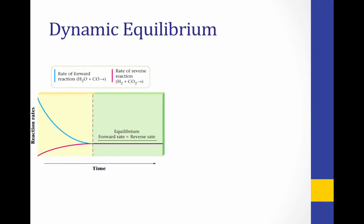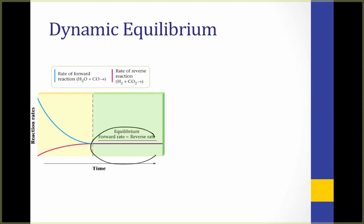Looking at a graph of reaction rate for the forward and reverse reactions, the forward reaction rate is shown in blue and the reverse in pink. Initially, the rate of the forward reaction is very high and the rate of the reverse reaction is very low, since there can't be any reverse reaction until a good amount of forward reaction has occurred. Eventually, the rate of the forward reaction slows down as more reactant is converted to product, and the rate of the reverse reaction picks up as more product is available to reconvert. Eventually these two rates converge and we are at equilibrium.